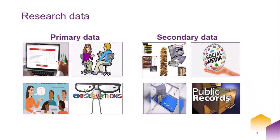Research data is of two types — primary data and secondary data. Primary data is collected by a researcher directly from the original source through experiments, surveys, interviews, observations, focus groups, and so on. Secondary data is existing data gathered from studies, surveys, experiments that have been run by other people, such as existing datasets at archives, essays, reviews, or any information available on social media.